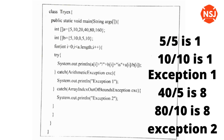This is an exception. One is a runtime error. You can use array index out of bounds exception. You can use exception 2. The output shows: group 5 is 1, 10 is 1, exception 1, 7 is 5, 8 is 8, exception 2.